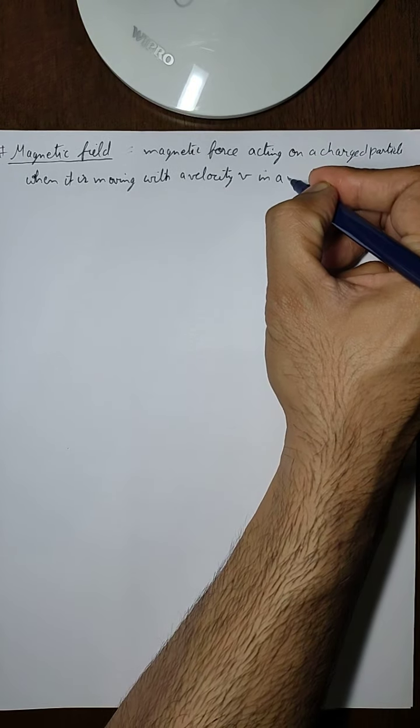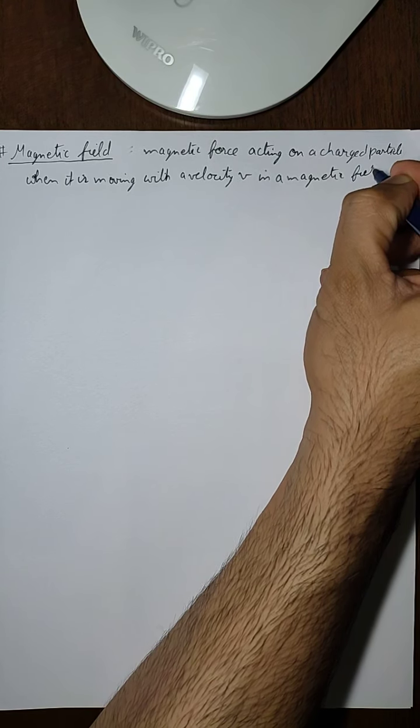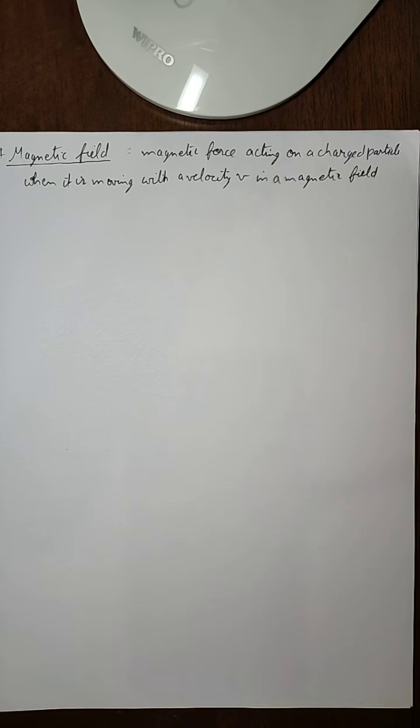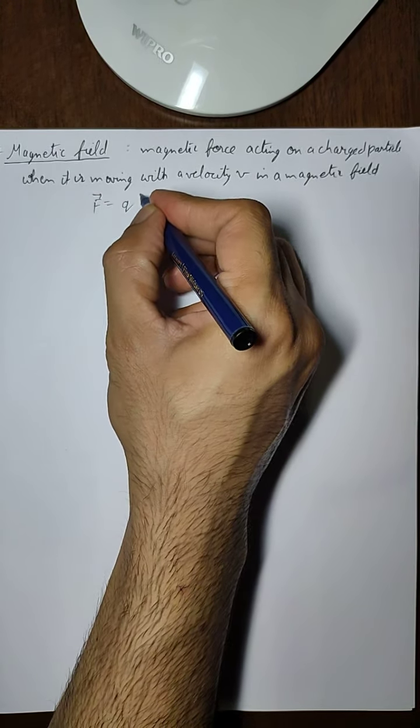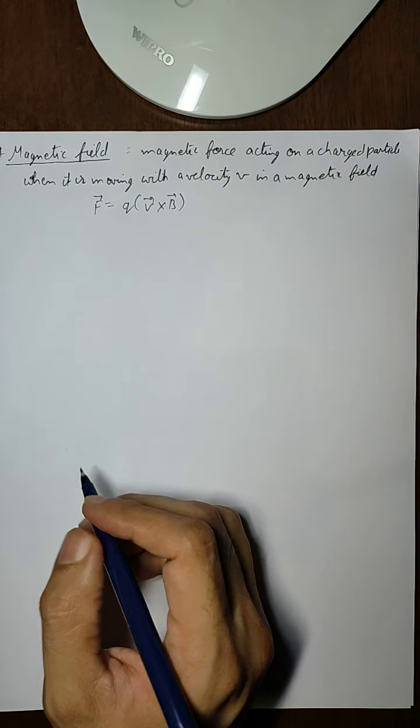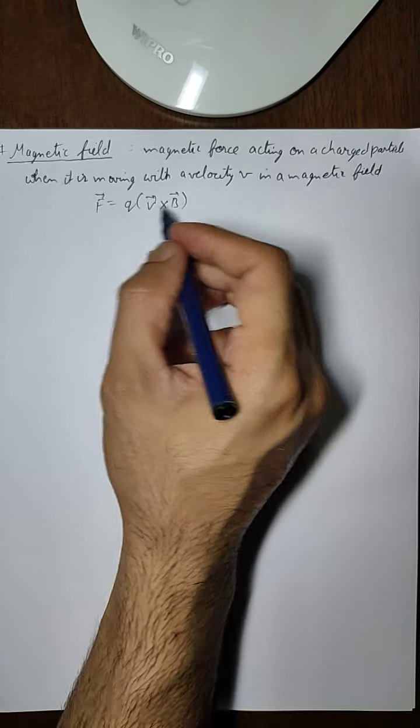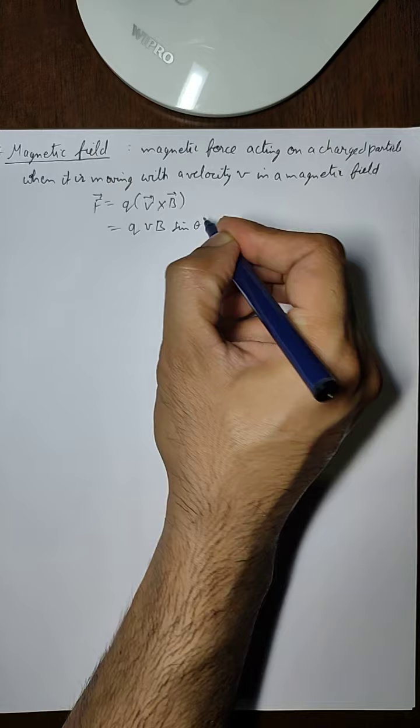In a magnetic field, we already know this formula is given by Q into V cross B, where B is the magnetic field. If I open this bracket, then this will be given as Q V B sine theta.